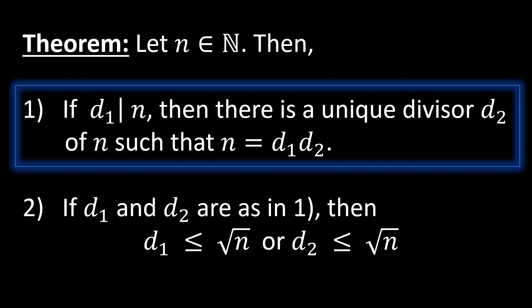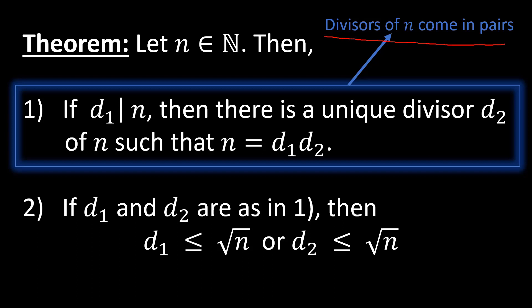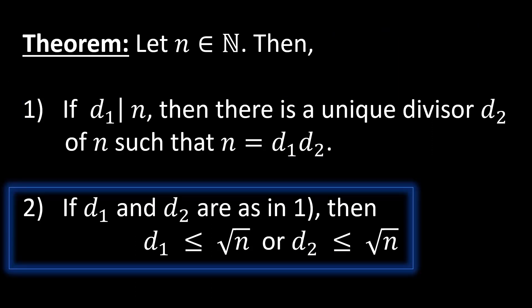Part one tells us that the divisors of a number come in pairs — once you have one divisor, there's another such that their product is n. Part two tells us that at least one of those divisors is less than or equal to the square root of n. If you don't want to watch the proof, I'll indicate the timestamp to skip ahead.